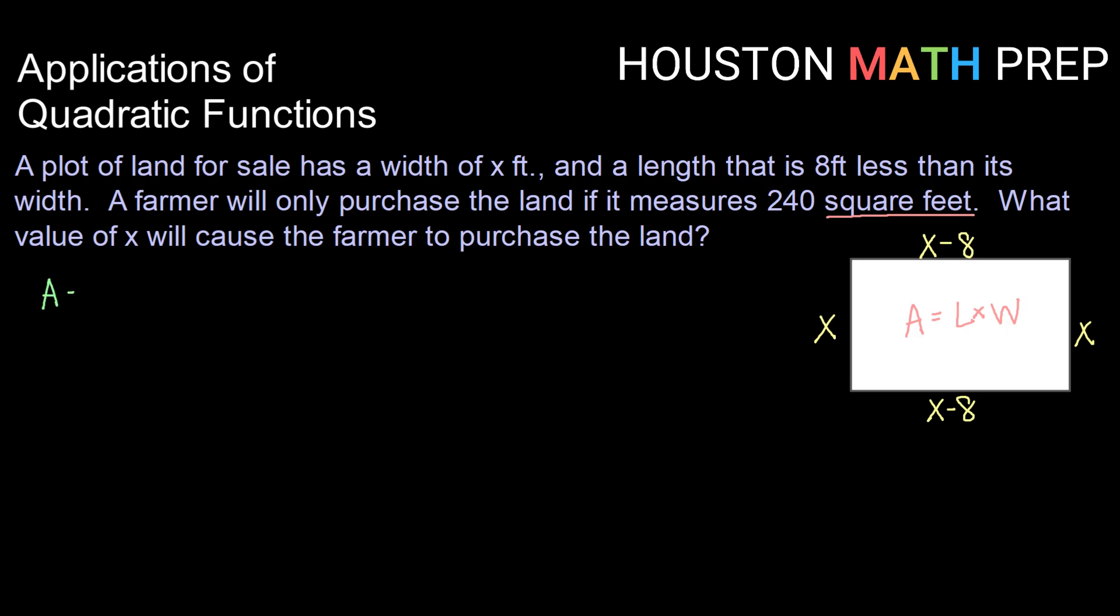So let's set up an equation. If area is length times width, then that would be x times (x - 8). And our farmer will only purchase this land if it measures 240 square feet.